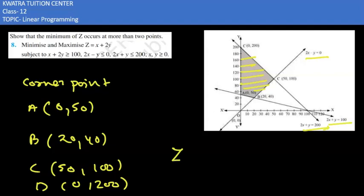When we put these values in our equation, which is Z equals x plus 2y, we will obtain four different values. Now let us create our table with corner point and then Z equals x plus 2y.